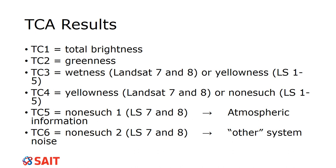TC2 tends to be greenness — this is looking at the health of the vegetation, so how green is it. TC3 is wetness for Landsat 7 and 8. If you go to anything older, Landsat 1 through 5, it is actually yellowness. Wetness indicates how much water is present, while yellowness indicates how dead the vegetation is — essentially how ready to harvest it is.